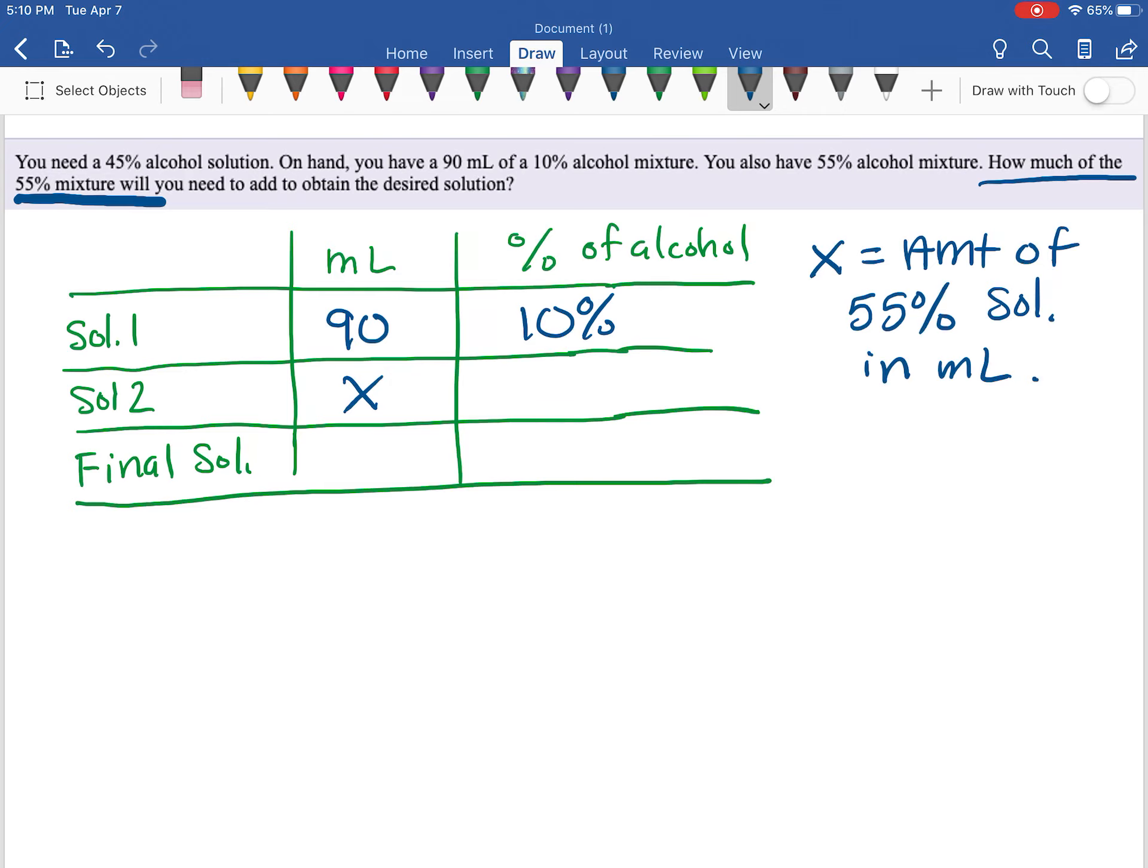The second solution, they don't tell us how much we have - that's what we need to find. So we're calling that x, and they're telling us for that solution it's 55% alcohol.